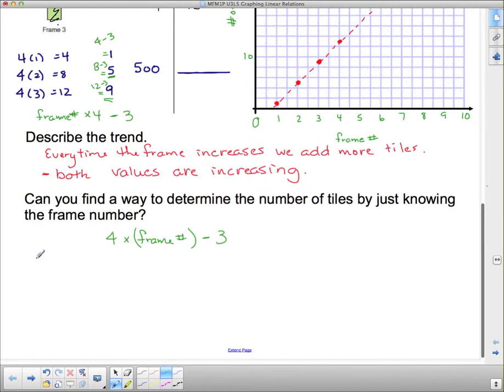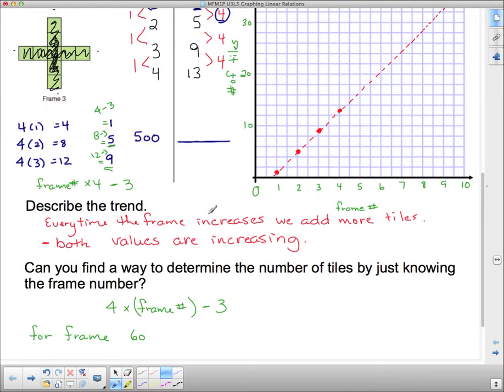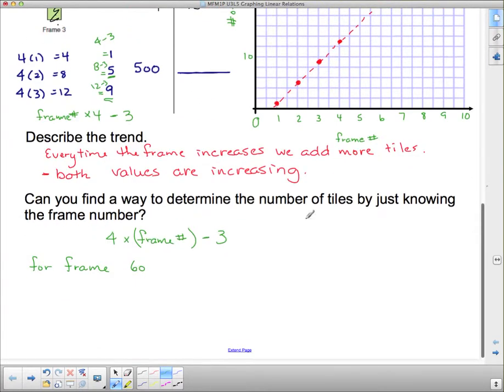So let's say for frame 60. Definitely don't want to have to keep adding. I don't want to carry on this chart all the way to 60. So I'm going to use this formula. This formula says I'd only have to take 4 times the frame number, which I said is frame 60, and then subtract 3. Well, 4 times 60 is 240. And then I subtract 3, which is going to give me 237. So in frame 60, there's 237, and I don't have to carry that all out.